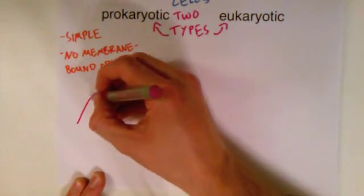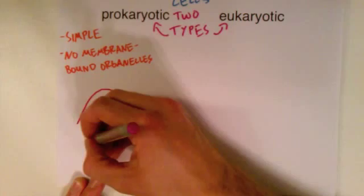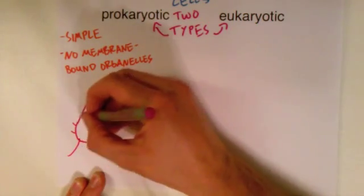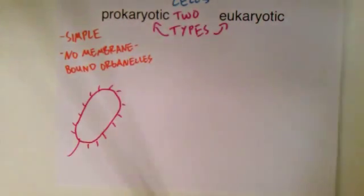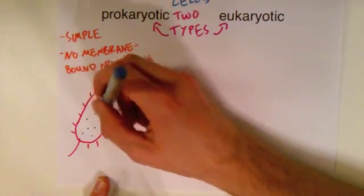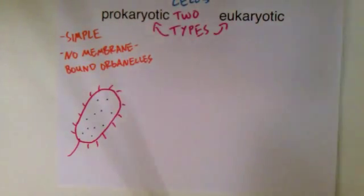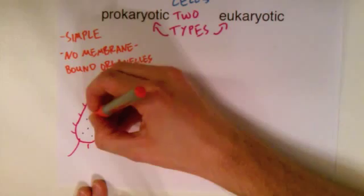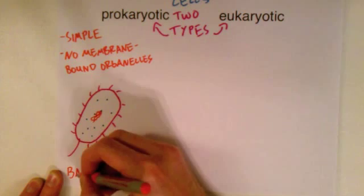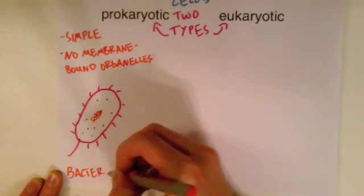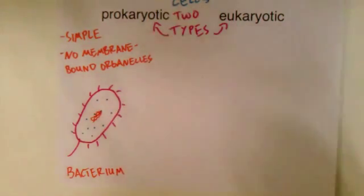Here is an example of a prokaryotic cell. So this is basically a very poor rendering of a bacterium, a single bacteria, and there are several structures in here we should label.